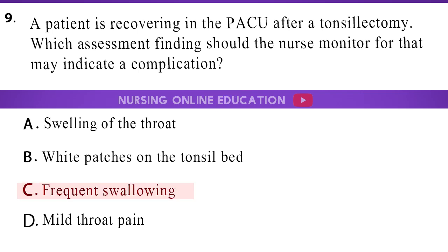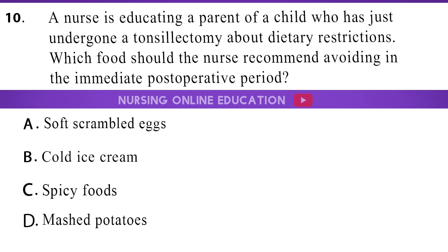The answer is option C: Frequent swallowing. A nurse is educating a parent of a child who has just undergone a tonsillectomy about dietary restrictions. Which food should the nurse recommend avoiding in the immediate postoperative period? A. Soft scrambled eggs. B. Cold ice cream. C. Spicy foods. D. Mashed potatoes.